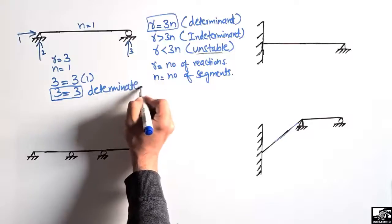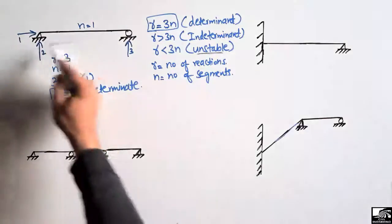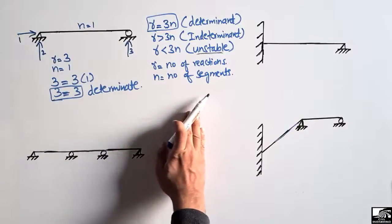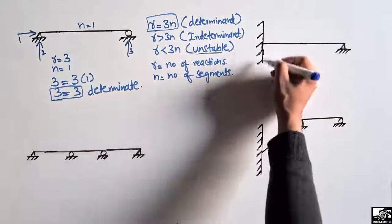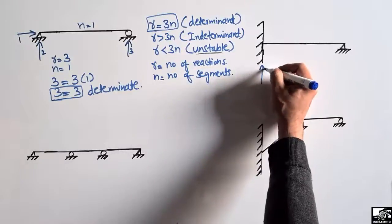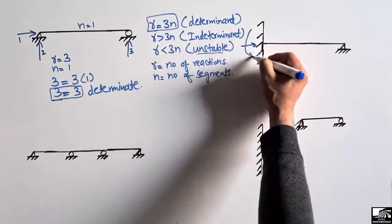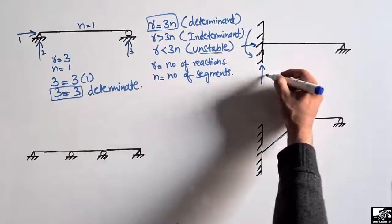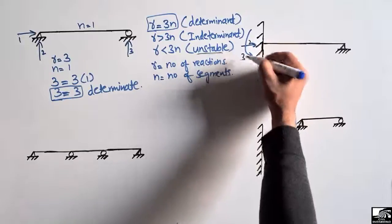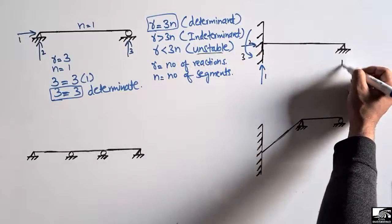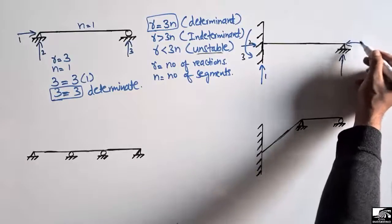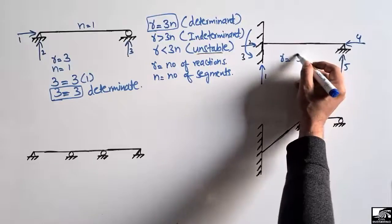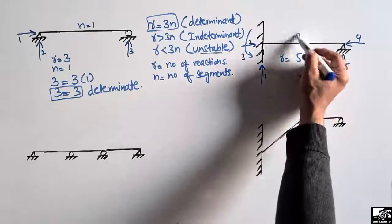Moving to the second beam: it has a fixed support, which can take vertical load, horizontal load, and moment — that gives three reactions. It also has a hinge support, which takes vertical and horizontal load, adding two more reactions. So R equals 5. This beam also has one segment, so n equals 1.